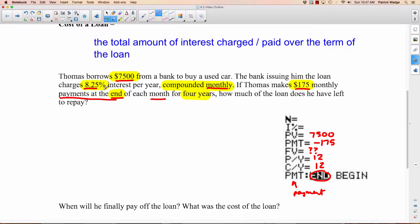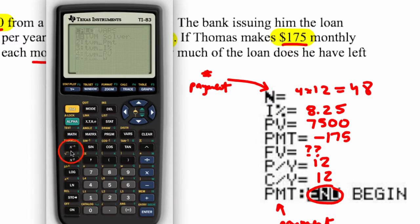The percentage is 8.25%, and N. I just want to make sure you're clear about this—the N value is the number of payments, not the number of compounding periods. Since you're paying monthly and it's over four years, that's 4 times 12, which is 48. We'll use our TI-83, use the TMV solver, and enter this information.